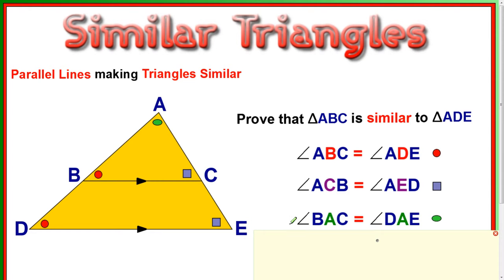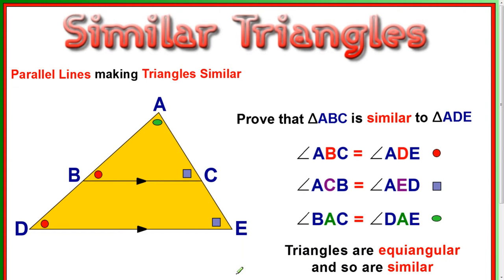And finally, the one at the top, which we just talked about at the start, BAC and DAE are exactly the same. That's why I've got this here. So because of all that, that means the triangles are equiangular. And therefore, they are similar.